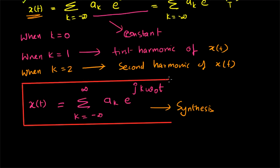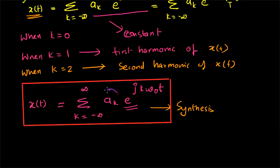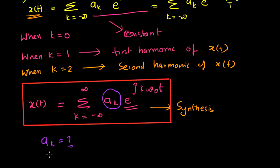Now we have one problem. We have expressed the signal in terms of complex exponentials e^(jkω₀t), but the question is: what are the coefficients ak, and how do we find them? We will see that in the next video. Only then can we say the derivation is complete — how to derive an expression for ak, the coefficients of the exponential.